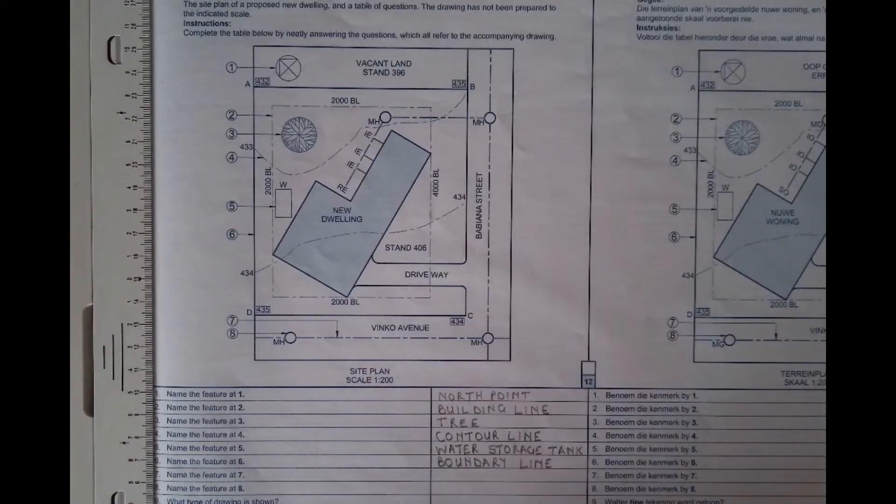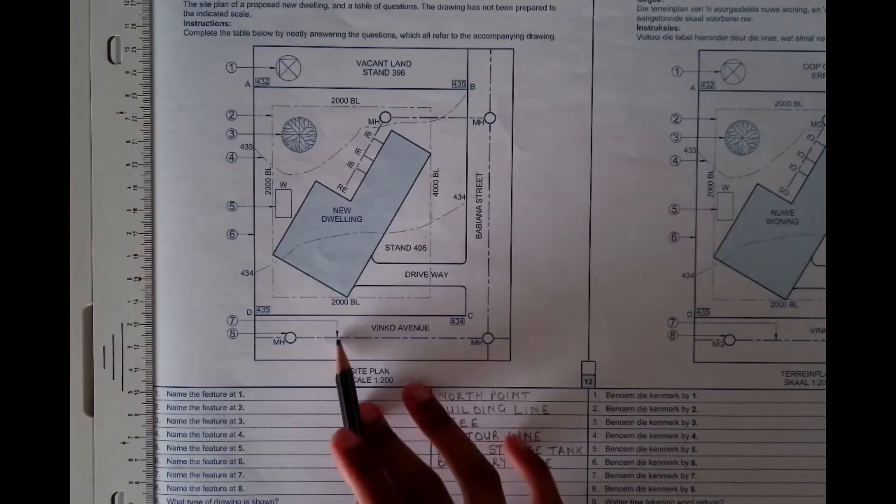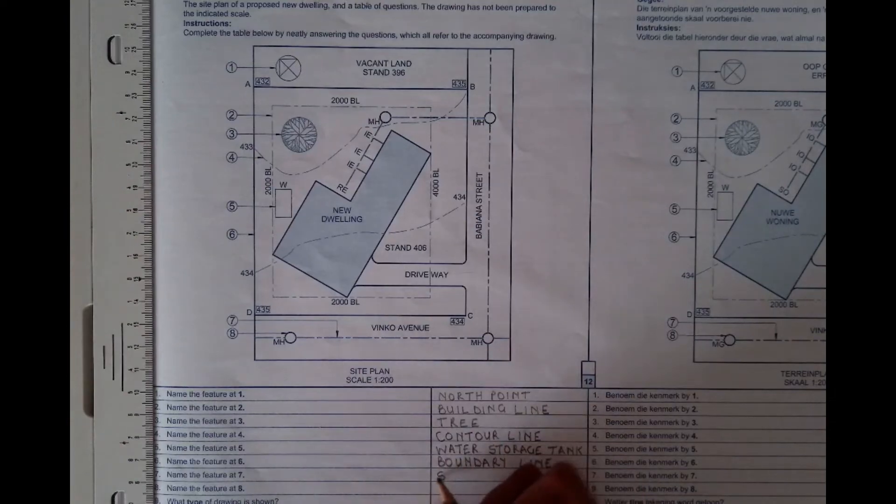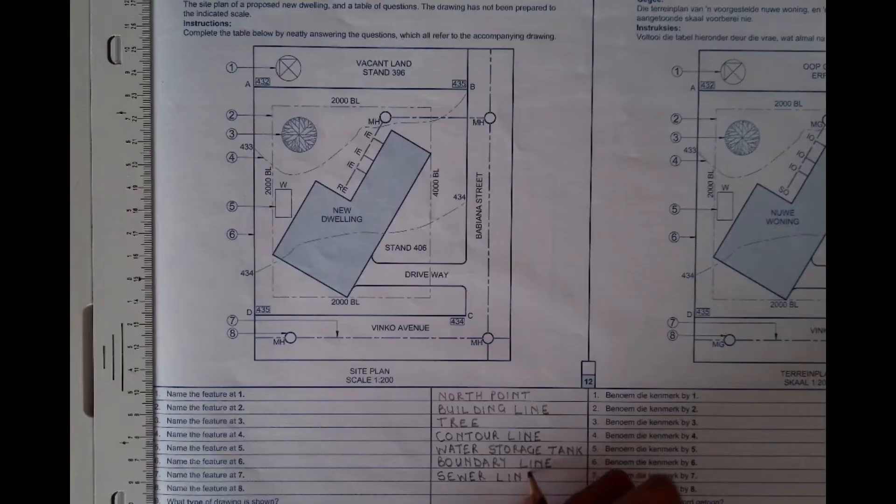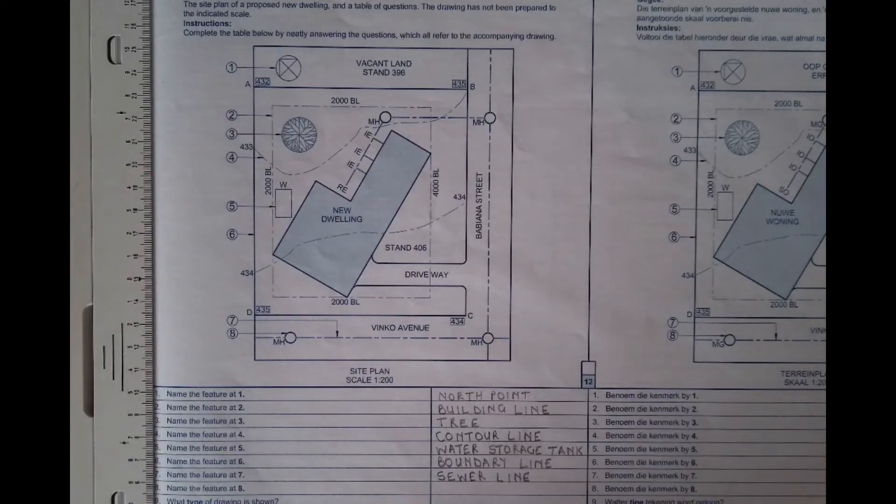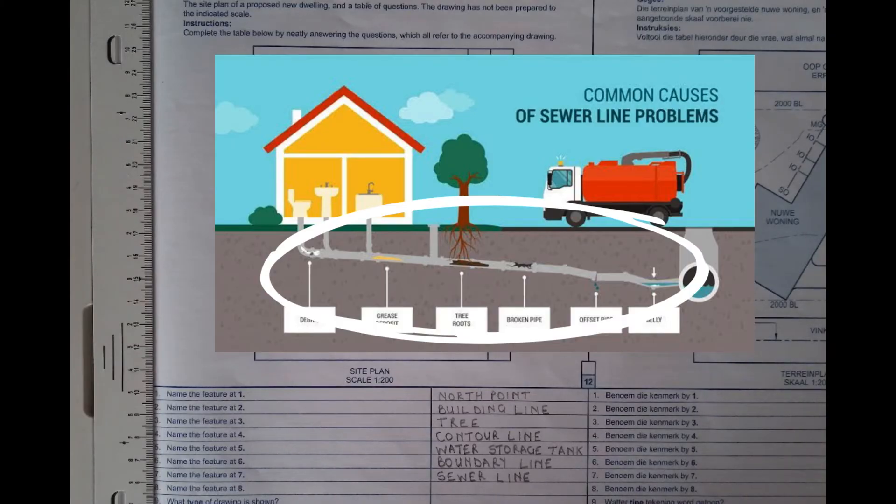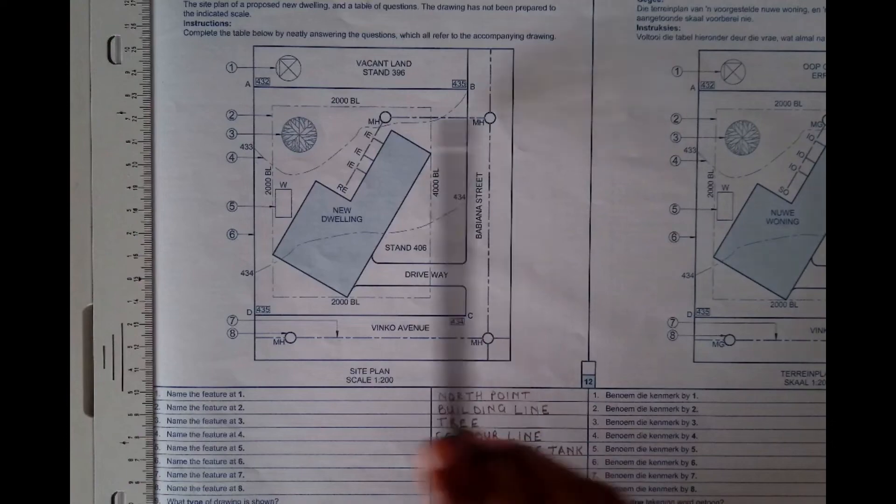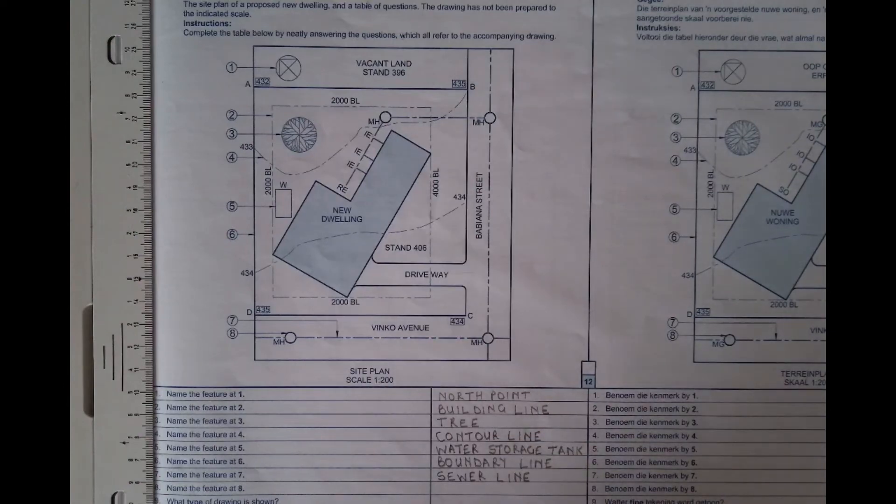And then name feature at seven. What do we have at seven? We have this line that looks like a center line. That line, we call it a sewer line. Our sewer line consists of large pipes that carry waste. That waste can be human waste or water waste. But then it carries that waste away from buildings to a place that it can be gotten rid of safely. So these lines, it's your pipes that make up a sewer line.